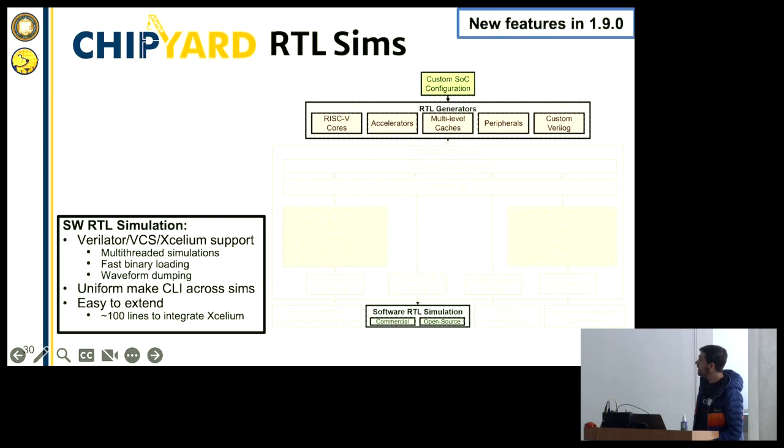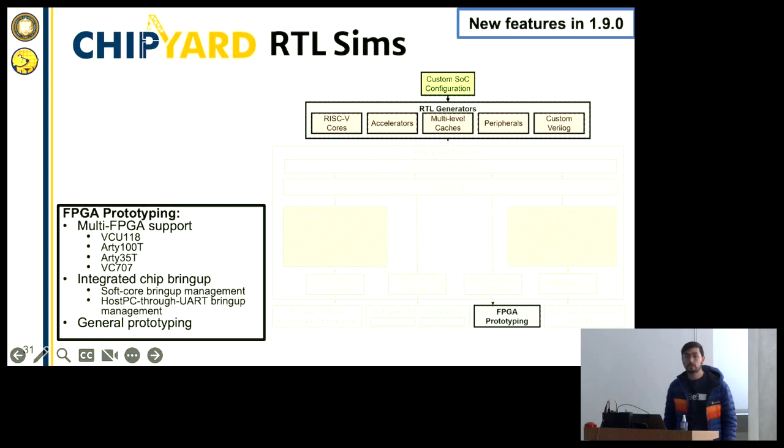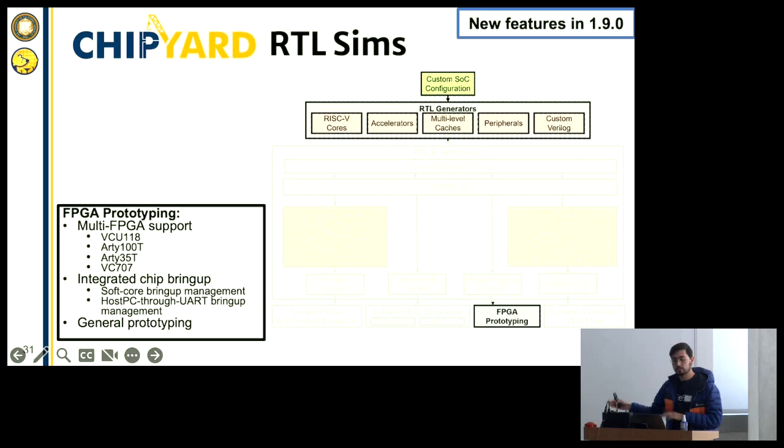Diving into software RTL simulation: we have hooks for Verilator, VCS, and Xcelium, but you can also plug in your own simulator. It's a plug-and-play interface to add your own simulator as well. For FPGA prototyping, you have an FPGA and want to run your RTL on it — you can plug and play it inside ChipYard. We use this for our integrated chip bring-up flow. There are a lot of features there that I don't have time to get into, but it's very useful.